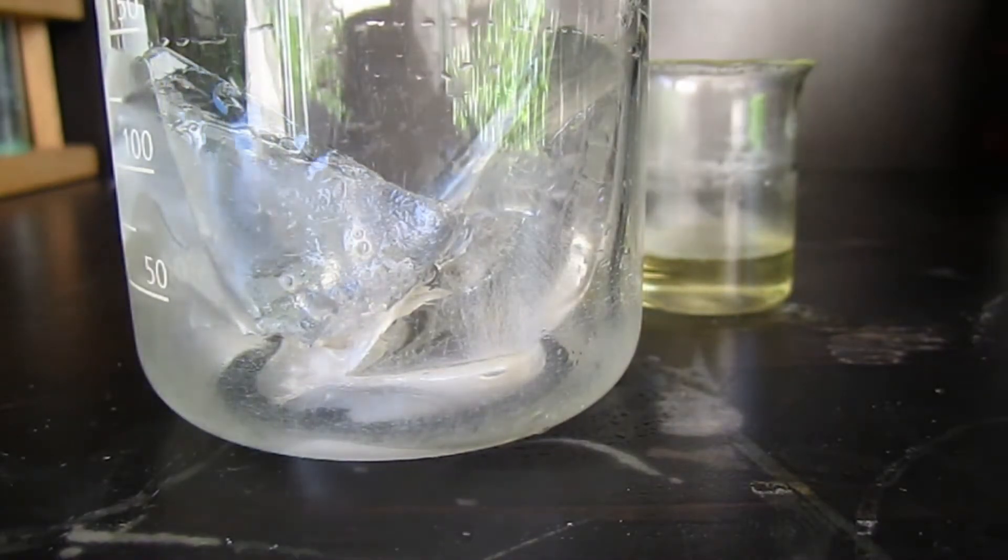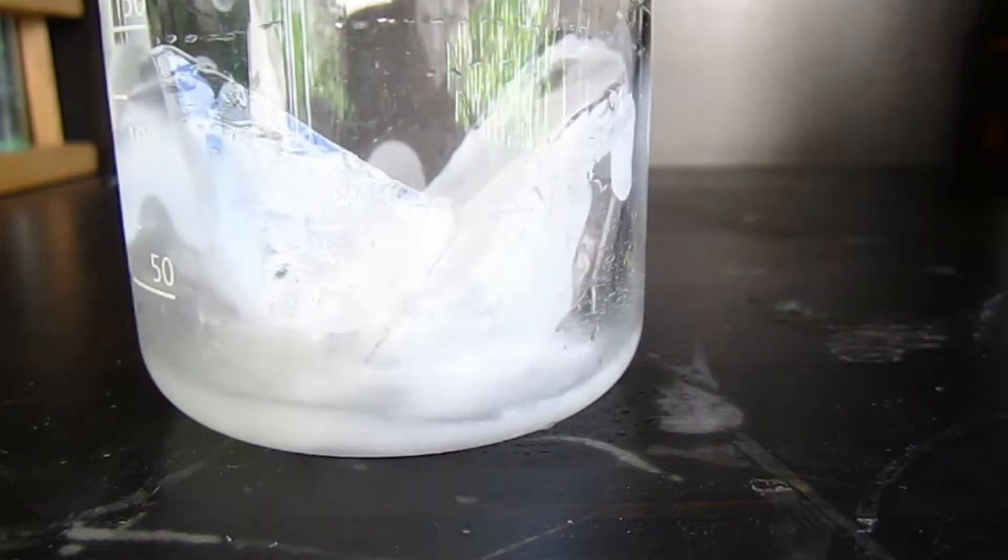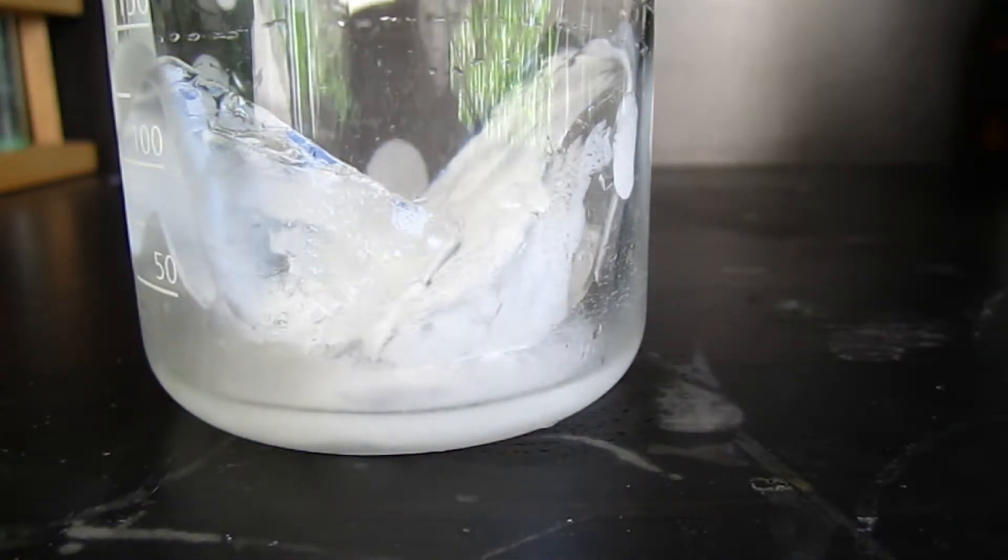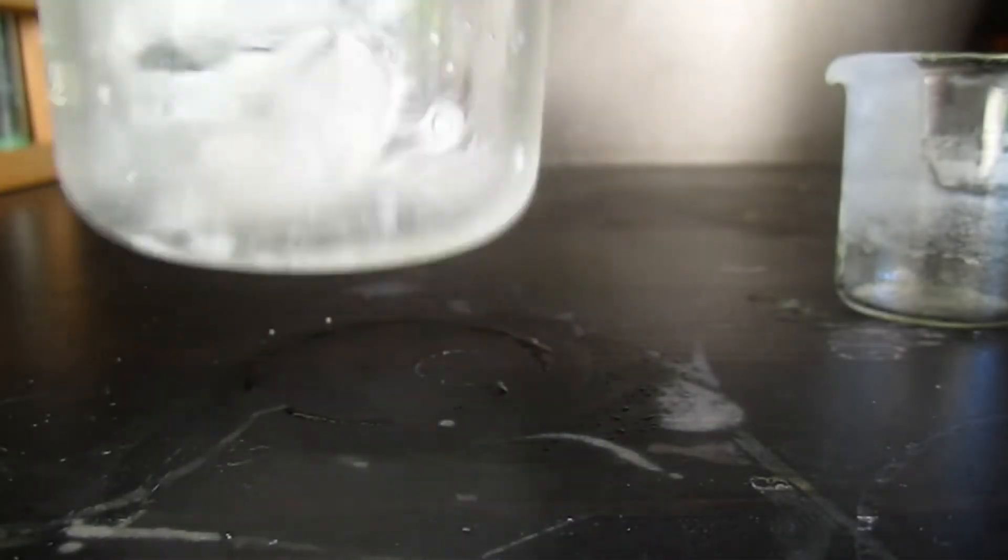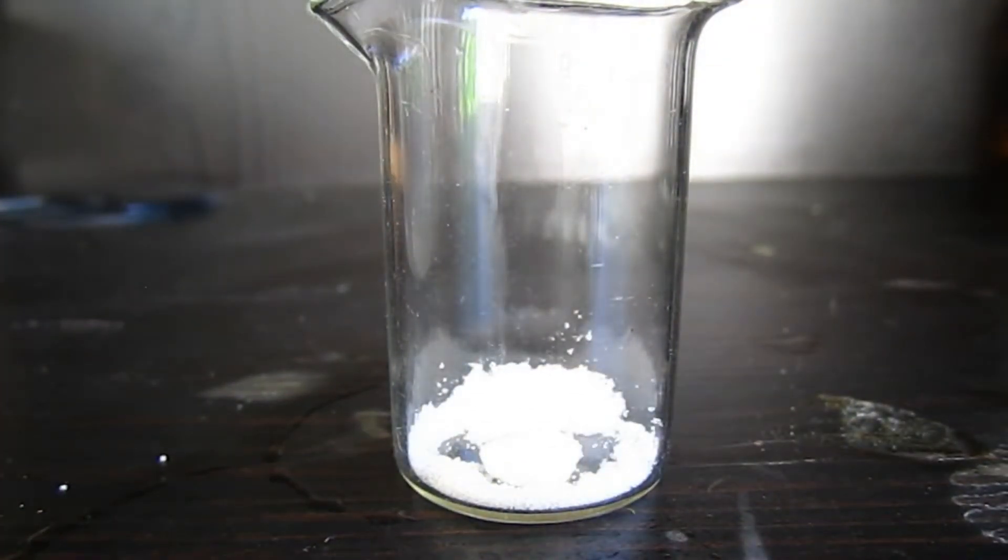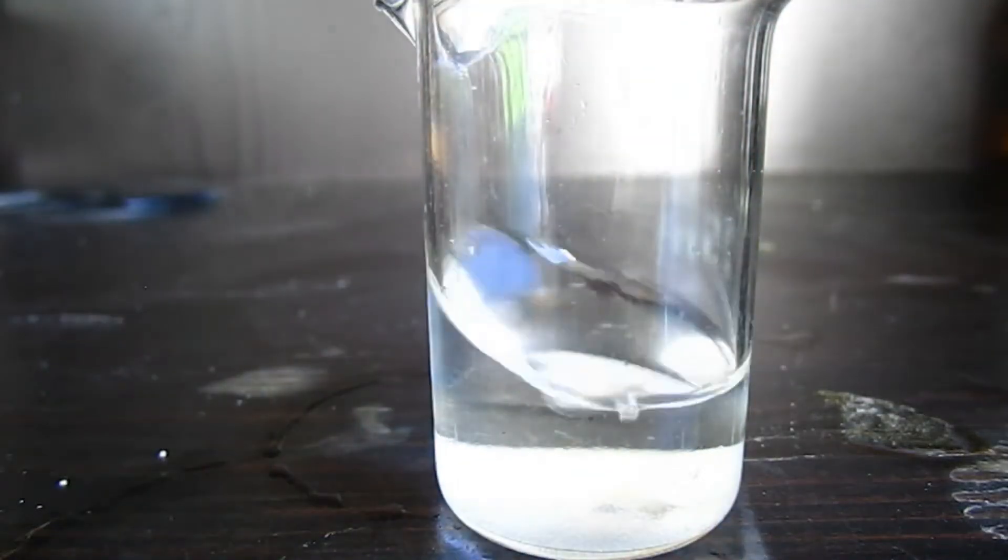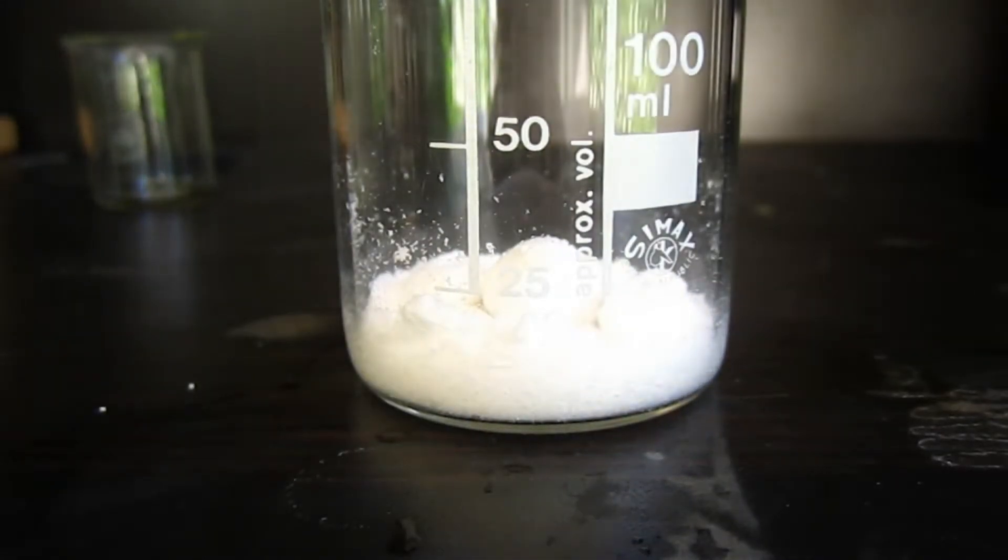Alright, so I got some ice here and I'm just going to add the aniline hydrochloride to the ice. You can see it precipitated out, but that's not a problem. So now I'm going to prepare a solution of sodium nitrite, also going to dissolve up the sodium acetate.